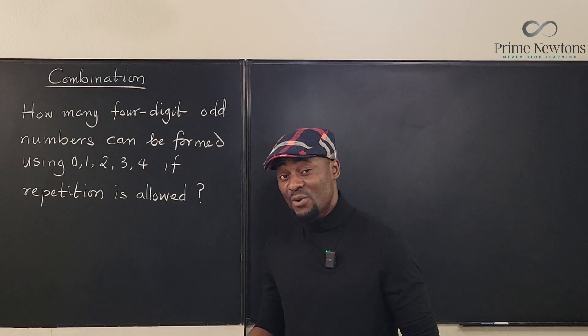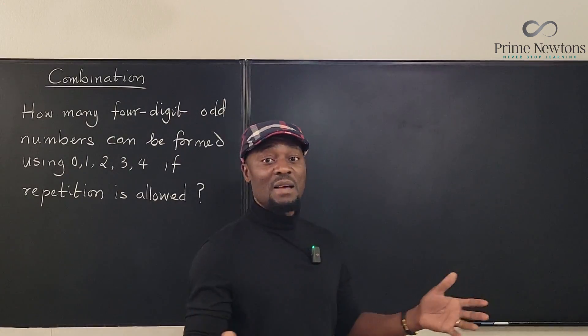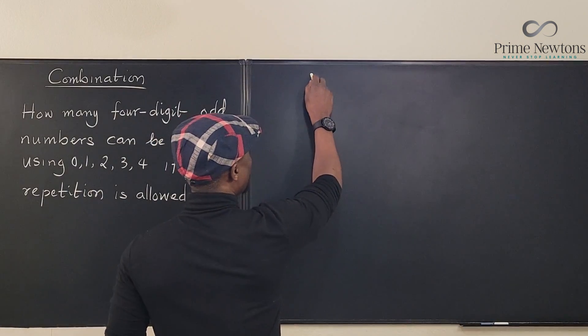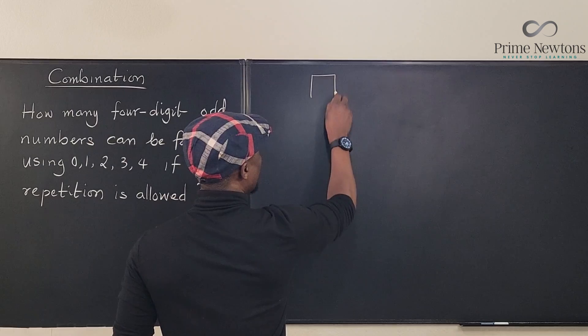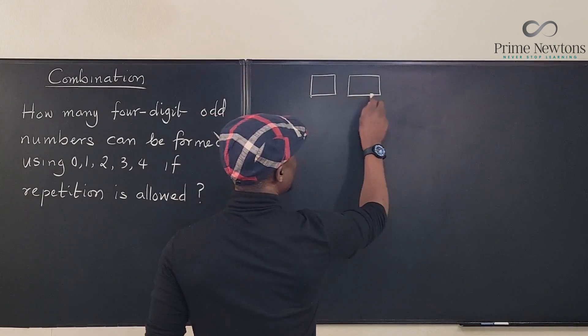So this is going to be a very quick one because all you have to do is create a template for the number. So you have a number: this is the first digit of the number, this is the second digit, the third digit, and the fourth digit.